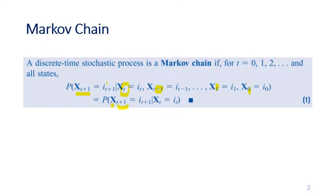The special thing about Markov chain is that to predict the value of x at time t plus one, you only need to consider the information of x at time t — just one time step before the one you're interested in. In the general stochastic process you need to consider all the history from time zero up to time t, but in a Markov chain you only need to consider the information from time t to predict what happens at time t plus one.